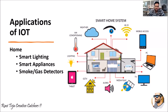The first application is the most famous one — the smart home system — where all the devices, appliances, and things in a home are connected through the internet or a network. Let us take a smart lighting system as an example.